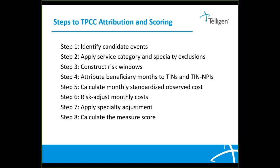Step 4: attribute beneficiary months to the TINs and TIN-NPI combinations. Step 5: calculate monthly standardized observed costs. Step 6: risk adjust these costs. Step 7: apply the specialty adjustment. Step 8: calculate the measure score.